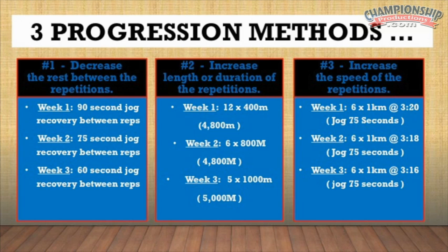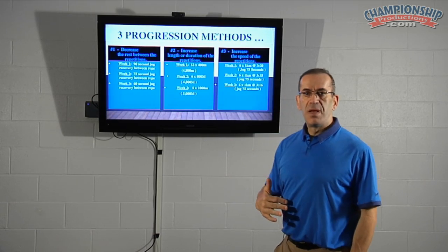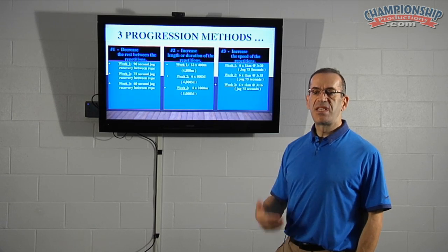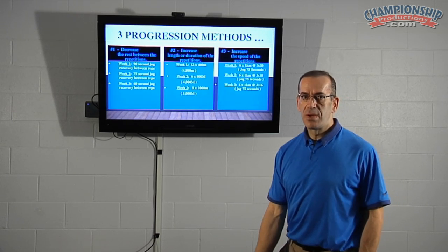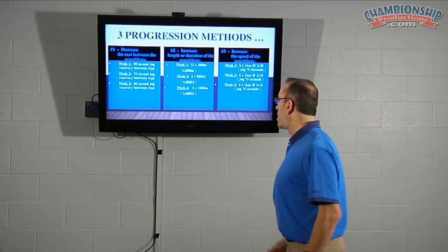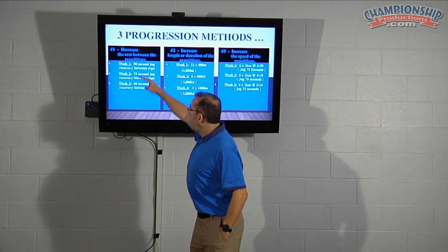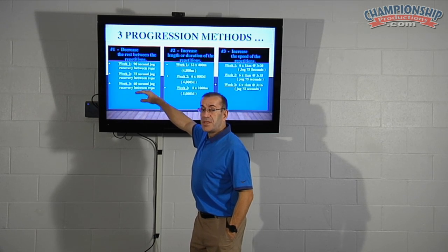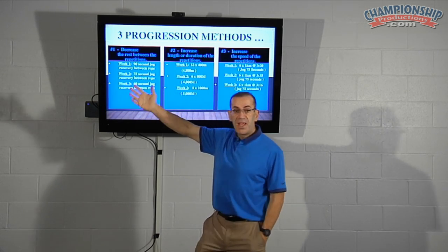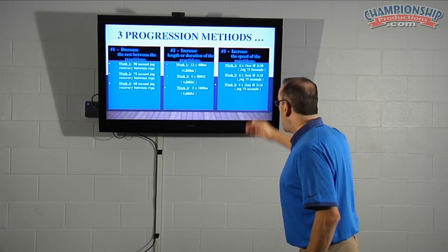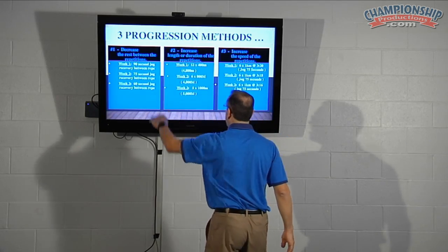Week three, drop another 15 seconds and now they're jogging just 60 seconds between repetitions. That's an overload progression — you have to apply overload systematically and gradually so the athletes improve their performance. You don't want to make it too hard. At the end of three weeks, you probably go back to assigning a new pace for that individual, maybe two or three seconds faster, then start with 90 seconds of jog recovery and go through the cycle again.